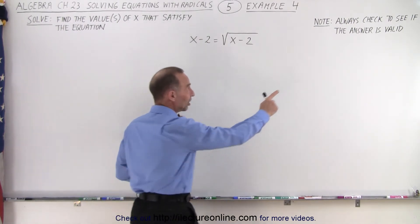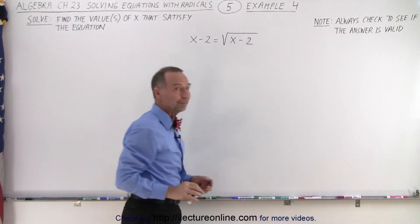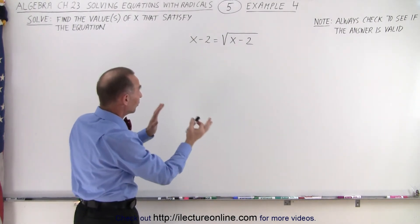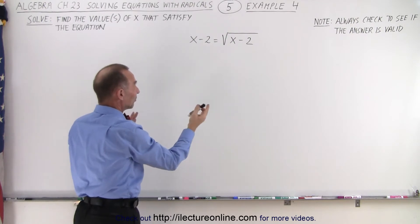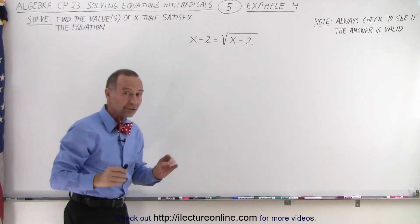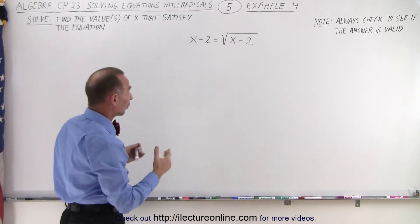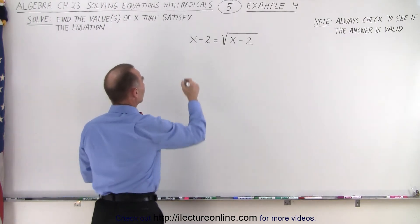But we do have to always check to see if the answer is valid. Now since we have the radical on one side and everything that's not underneath the radical on the other side, we can simply square both sides. So let's go ahead and do that.